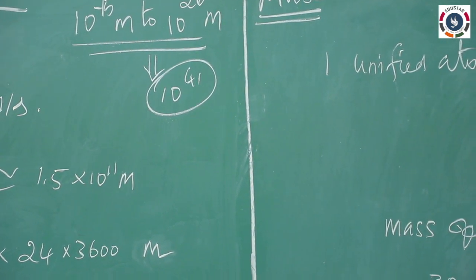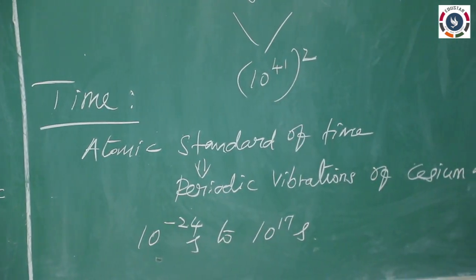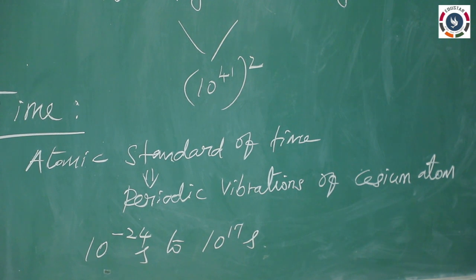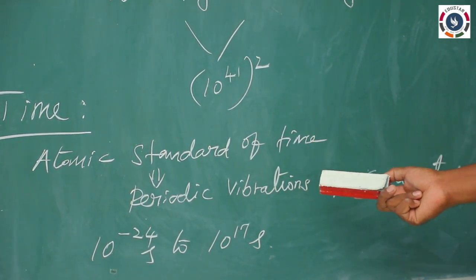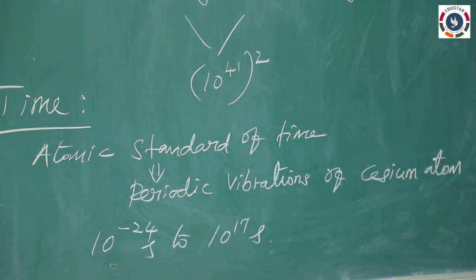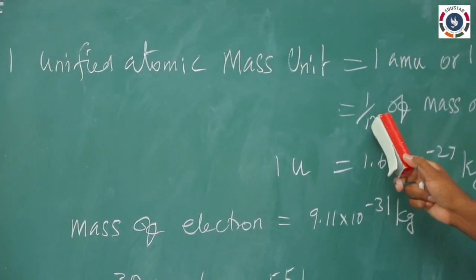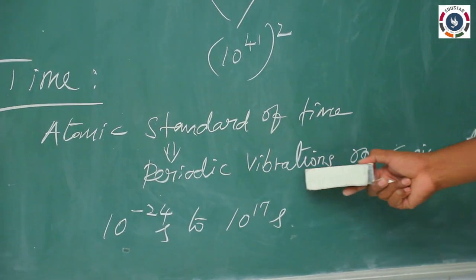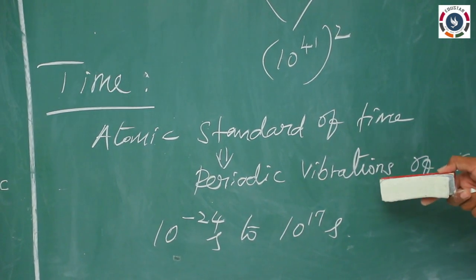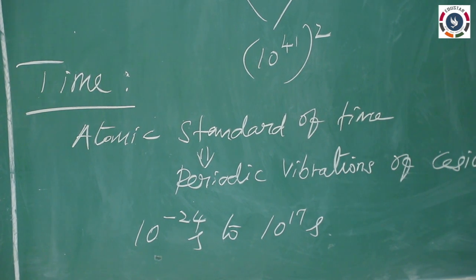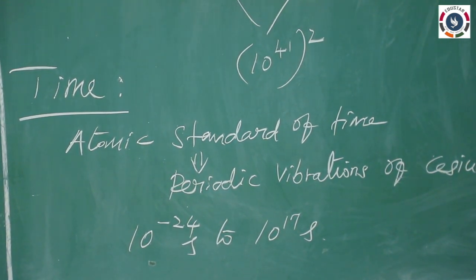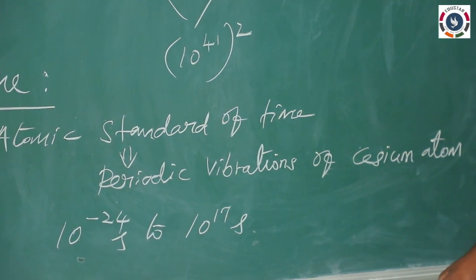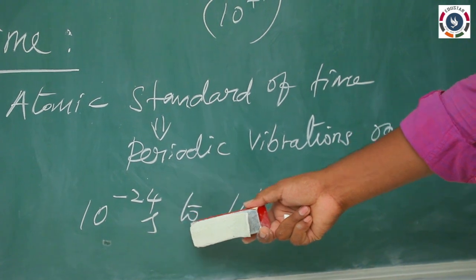Similarly, the third quantity is time. We normally use the time interval between two events — that is called time. Time is measured by the atomic standard of time, which is based on the periodic vibrations of the cesium atom. Similar to how mass is measured in terms of 1/12th of the mass of the carbon atom, time is represented by means of periodic vibrations of the cesium atom. This is called the cesium atomic clock. All international laboratories use cesium atomic clocks, which are very accurate. The time range is from 10⁻²⁴ second to 10¹⁷ second.